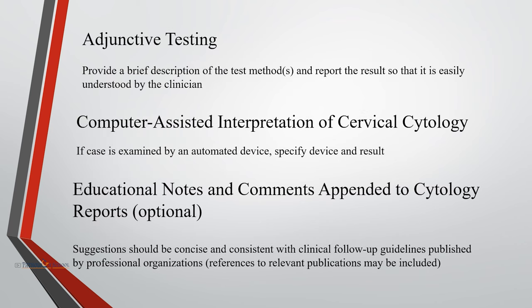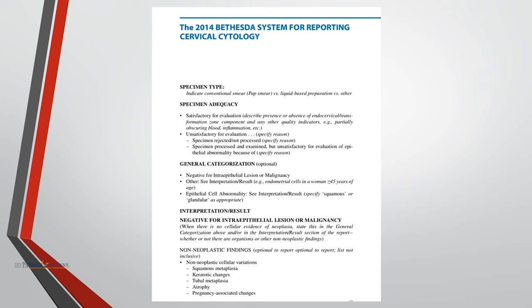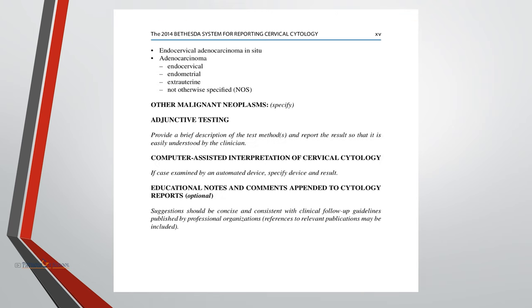For adjunctive testing, we provide a brief description of the test method and report the result so that it is easily understood by the clinician. For computer-assisted interpretation of cervical cytology, if the case is examined by an automated device, we must specify the device name and its result. Educational notes and comments appended to cytology reports are optional; suggestions should be concise and consistent with clinical follow-up guidelines published by professional organizations. This concludes the reporting criteria of cervical cytology given by the Bethesda system.